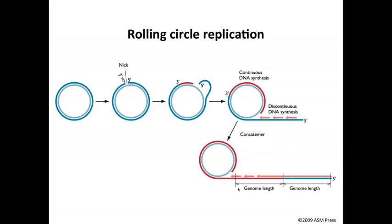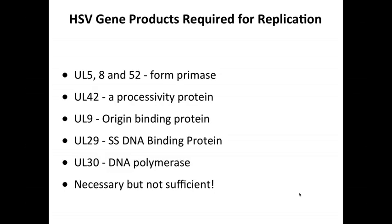There is no end problem because you are just packaging genome-length pieces. What happens is you get a concatamer of genomes, you then package those into the viral particle, and exact genome lengths are recognized by the packaging machinery and cleaved as they enter the capsid. The very last copy made by discontinuous synthesis will have an end problem, but that is one out of hundreds of copies in the concatamer and is simply discarded. All the others are exact genome double-stranded DNA copies, so there is no end problem except perhaps for that last piece.